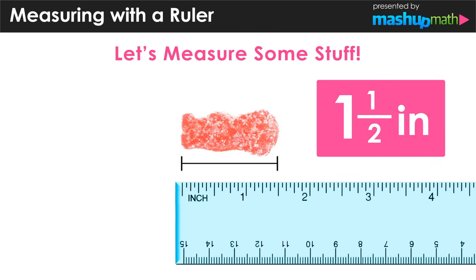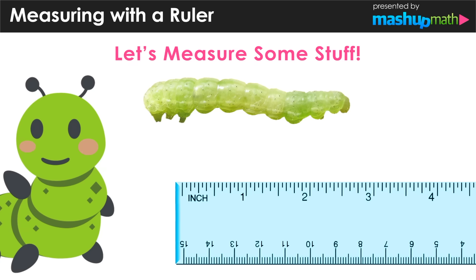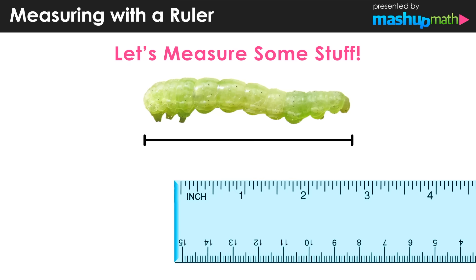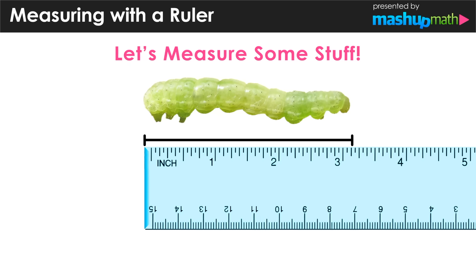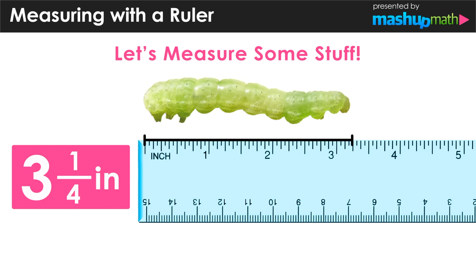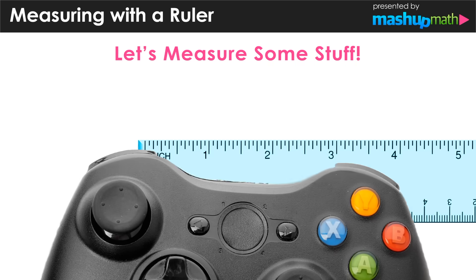Now let's find the length of this inchworm. Again, we line up the zero inch mark with the left edge of the figure and see how far along the ruler it extends to the right edge. In this case, three and one quarter inches.